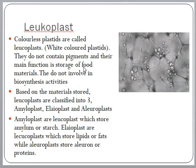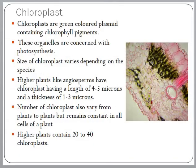So, plastids are broadly classified into chromoplasts and leucoplasts. Chromoplasts are colored plastids including chloroplasts, phaioplasts, and rhodoplasts. Whereas the colorless plastids, leucoplasts, include amyloplasts, lioplasts, and alluroplasts.